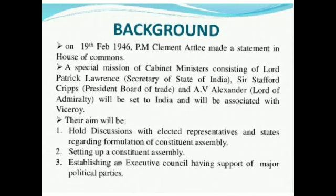The mission had two basic purposes: to hold discussions with the elected members and states regarding the formulation of constituent assemblies, and to set up a constituent assembly establishing an executive council having the support of major political parties. The members included in the mission were Sir Stafford Cripps, A.B. Alexander, and Lord Pethick-Lawrence. They wanted to bridge the gap between Britain and the Indians.